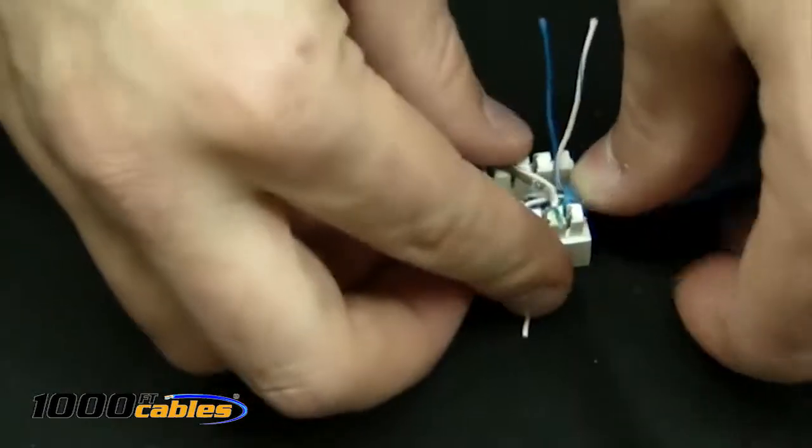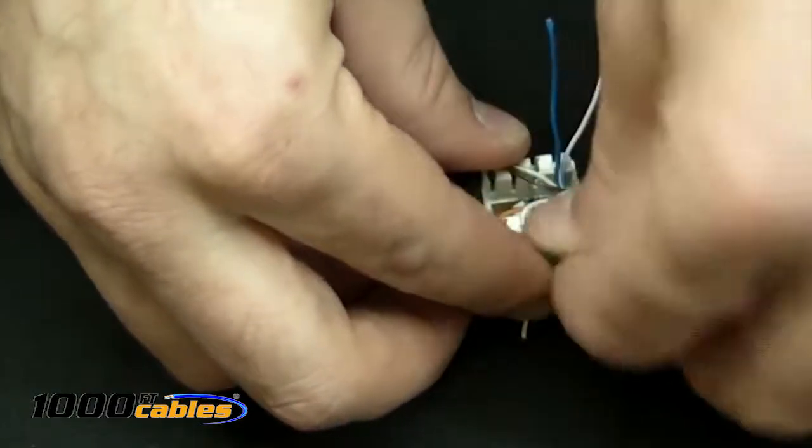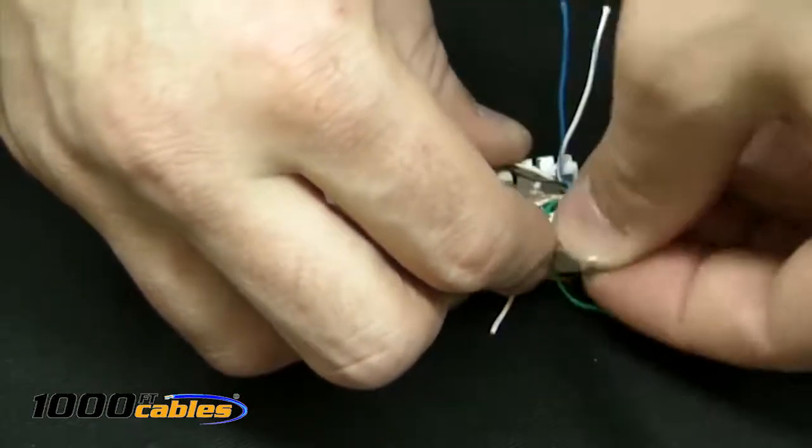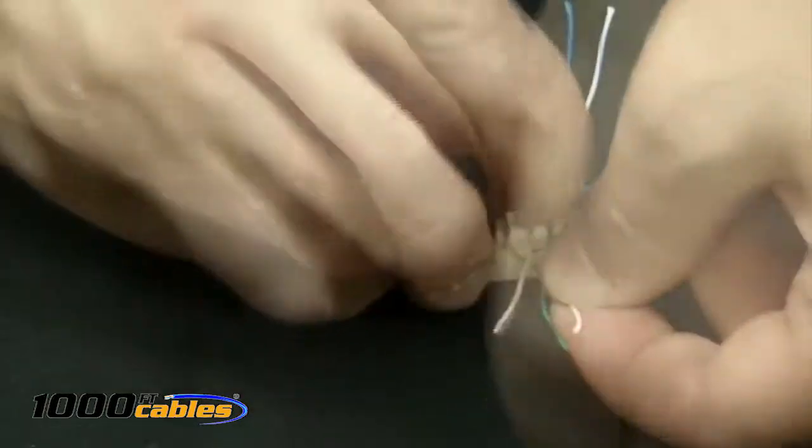We're going to go ahead and place a solid orange in, and the orange with white stripes, and a solid green, and then the green with white stripes.